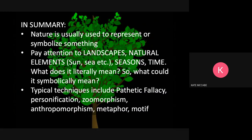So in summary, nature is usually used to represent or symbolise something. Start by thinking of what it literally means — pay attention to the landscapes. What is the literal meaning of a desert or a mountain? What does it literally mean if you try and walk across it? Think about those natural elements: the landscape, seas, and time. What does it literally mean? Then think about what it could symbolically mean. Then think of those typical techniques: pathetic fallacy, personification, zoomorphism, anthropomorphism, metaphor, or motif. Thank you very much Year 9. Hopefully you've learned something about how writers use nature in literature, and that ends our webinar.